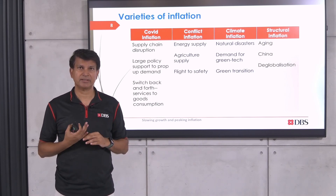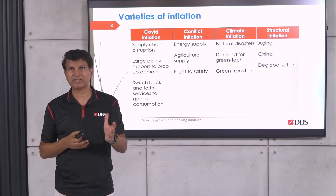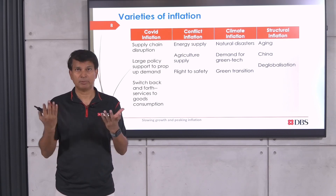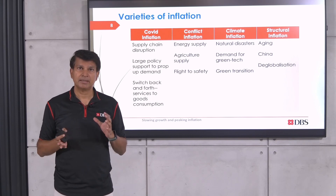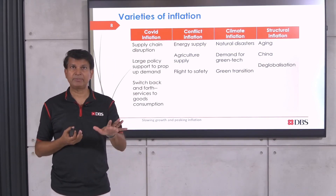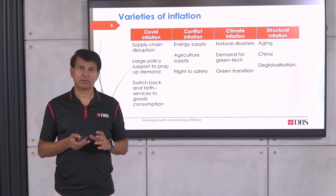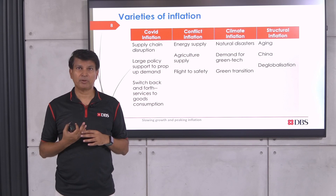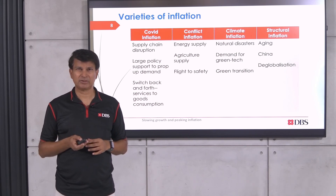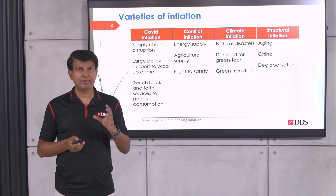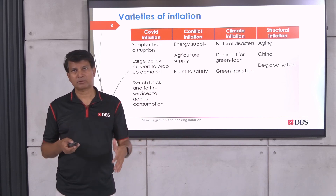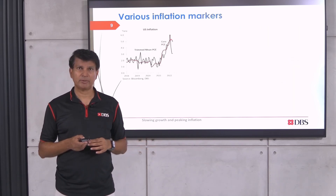We are seeing record droughts globally — Singapore recently had some of the hottest temperatures in living memory, and India is suffering from a historic drought — leading to agriculture failure and chronic price rises. There is also demand for green tech: an electric vehicle future will consume a lot of batteries requiring rare earth minerals, pushing those prices up. Finally, structural inflation arises as labor forces shrink due to aging in countries like China, Singapore, or Europe, and deglobalization drives redundancy and inefficiency. These factors mean we'll have inflation headaches in 2023, 2024, and 2025.